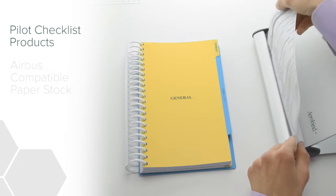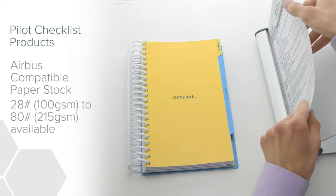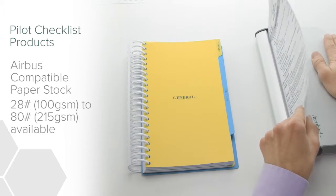Add revisions or print your checklists with ease using Airbus compatible paper stock and our 22-hole desktop paper punch.